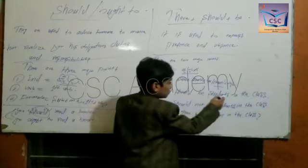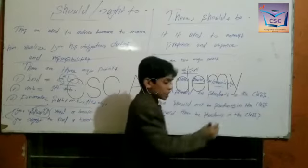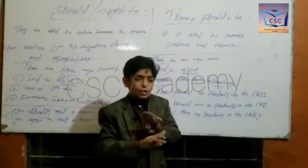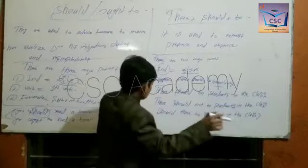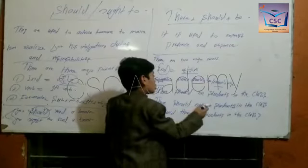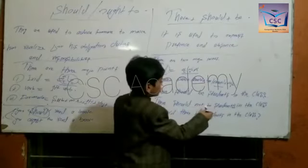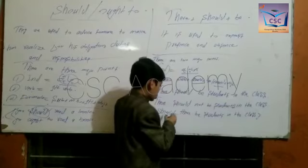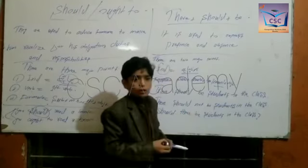'There should be students in the class' — it means there should be students, otherwise I will not teach, I will not go there. 'There should not be students in the class.' 'Should there be students in the class?'